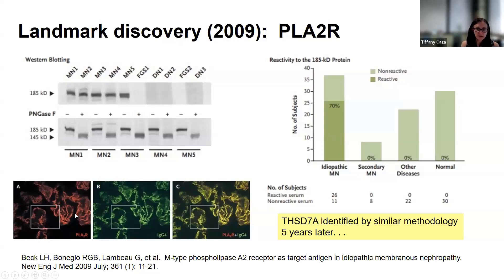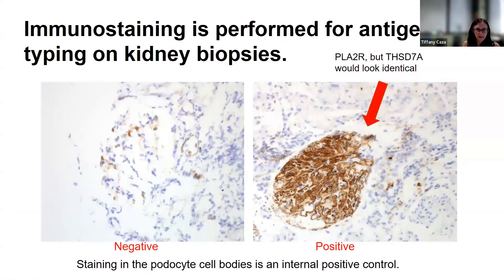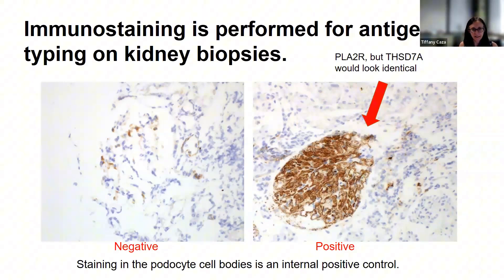THSD7A was also identified by this same methodology in 2014. Immunostaining can identify an antigen type on a kidney biopsy. For PLA2R or THSD7A, a negative immunostain will still show some background staining in glomeruli due to expression within podocytes; however, a positive result will show granular capillary loop staining.